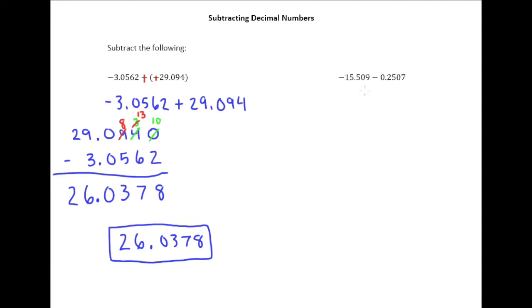All right, so now let's take a look at this one. Again, we have a negative minus a positive. So let's go ahead and do our trick of cross the line, change the sign. But let's clean it up first before doing anything else. This is negative 15.509 plus negative 0.2507.